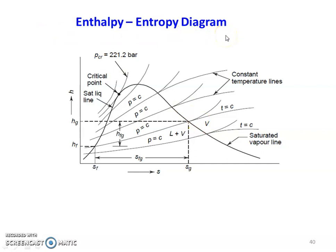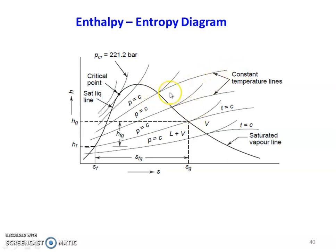The enthalpy-entropy diagram is the Mollier diagram. It is graphically represented with enthalpy on the y-axis and entropy on the x-axis. There is again the bell-curve shape with the critical point at the top. The left curve is the saturated liquid line and the right curve is the saturated vapor line. Constant pressure lines run from left to right, and inside the wet region we have the dryness fraction lines — as discussed in the last lecture.